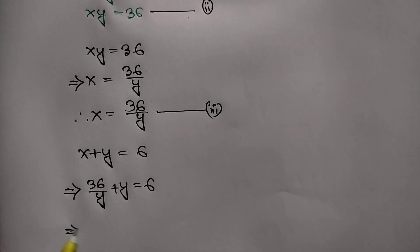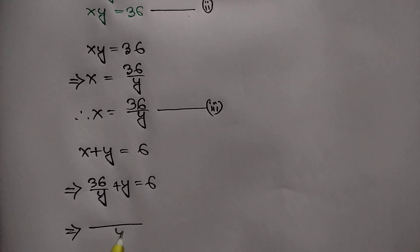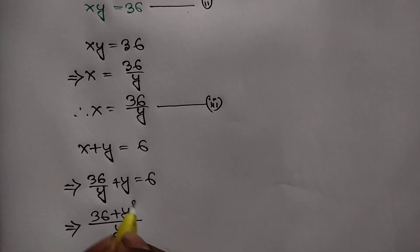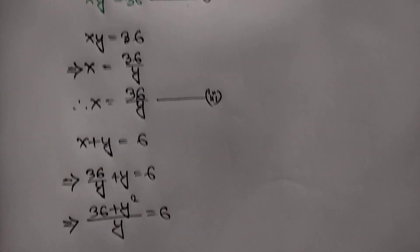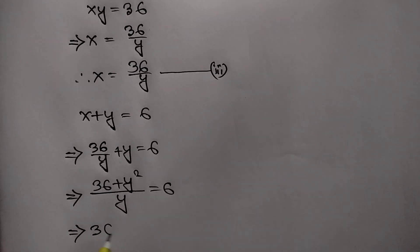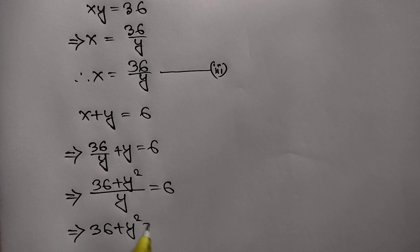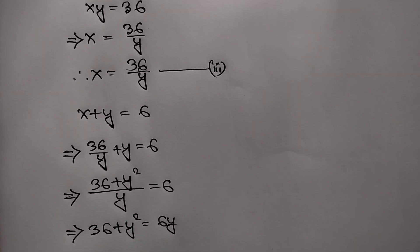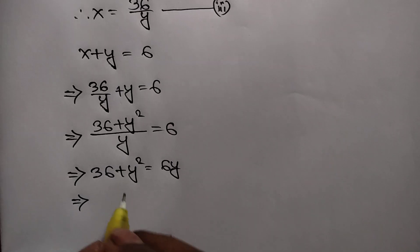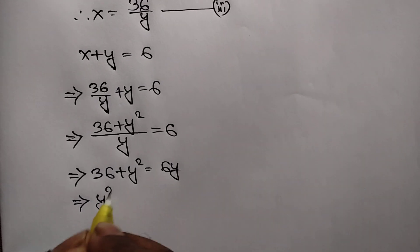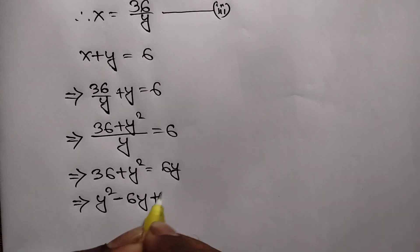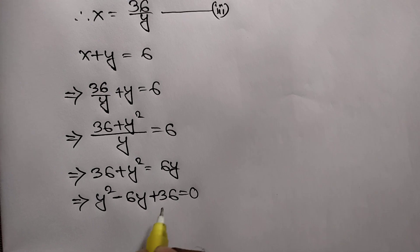The LCM is y, so multiplying through: 36 plus y squared is equal to 6y. Taking 6y to the left side, we get y squared minus 6y plus 36 is equal to 0.